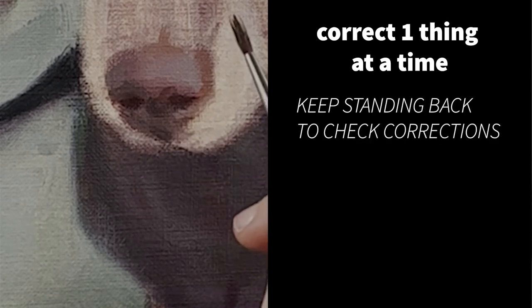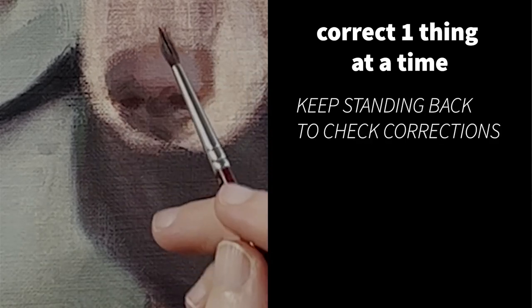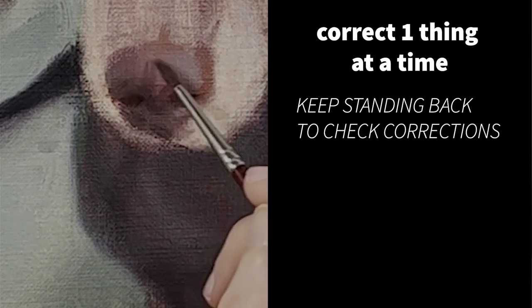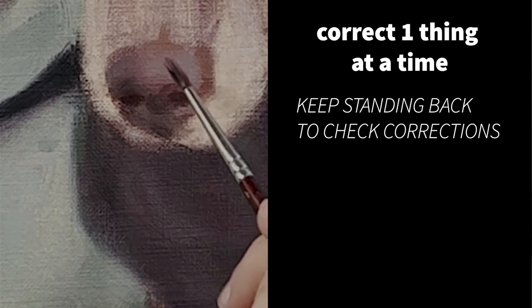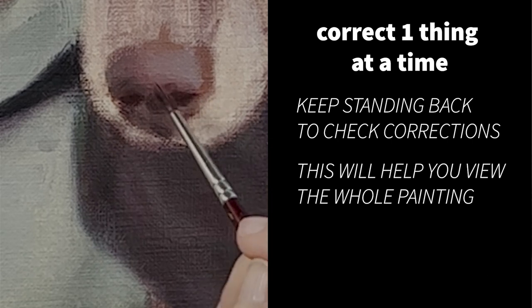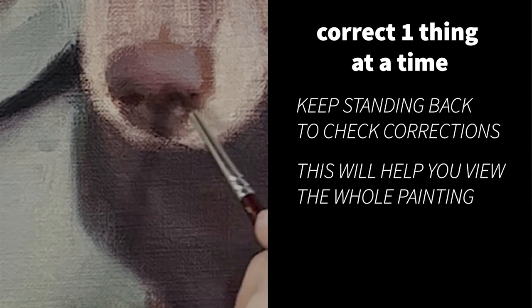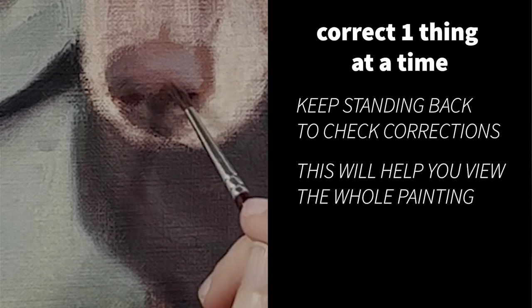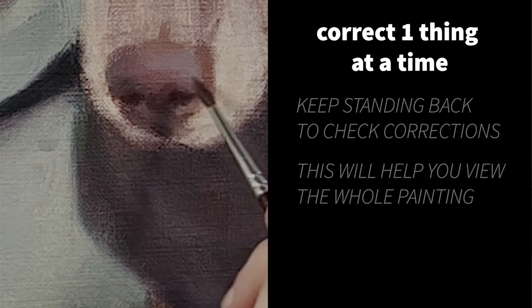Work on correcting one thing at a time. Stop, stand back and see how it looks. Then have a go at correcting the next thing. Don't forget to keep viewing your painting in terms of the whole picture rather than just the area that you are working on and trying to fix. Constantly standing back will help you do this.